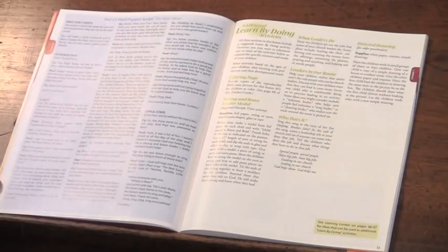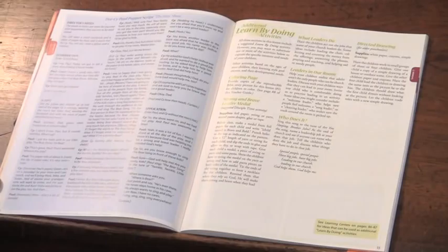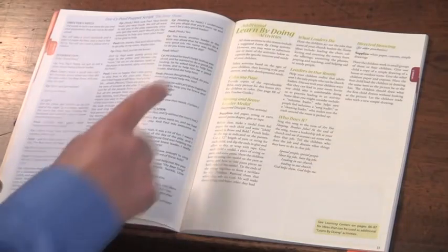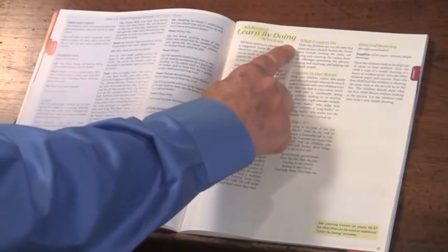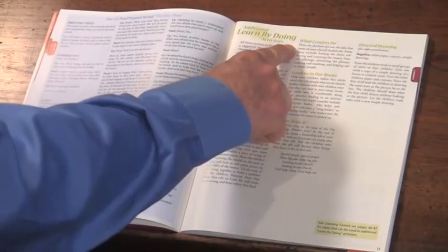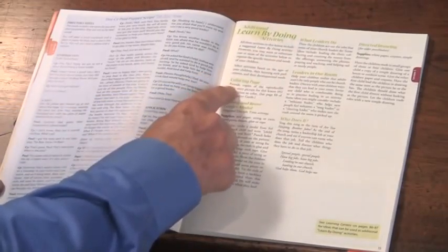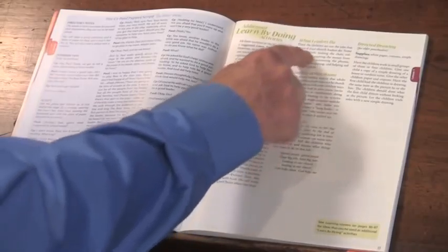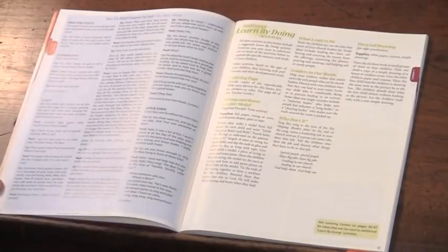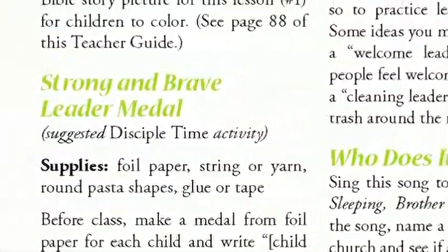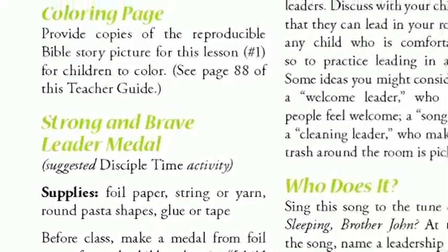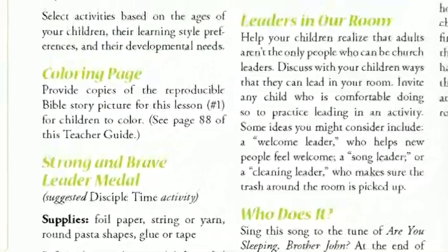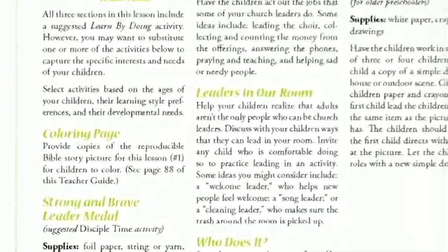The purpose of this script is to do the life application of the story the kids have just heard. With what I've shown you so far, you're going to have at least 45 minutes to an hour with your preschoolers. But if you'd like some additional activities, we have additional learn-by-doing activities. On this page alone, we have seven additional activities for your kids, and we'll tell you what supplies you need. You may discover that one of these activities works better than what you originally chose.